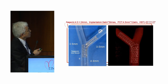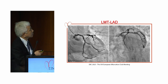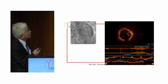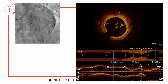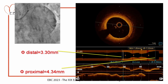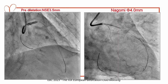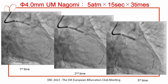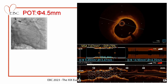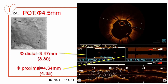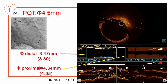Following this data, we applied dilation using NSE and implanted a Nagomi 4.0 mm stent with three times inflation at low pressure, then performed the POT. The distal part measured 3.47 mm and the proximal part 4.34 mm — a good result.